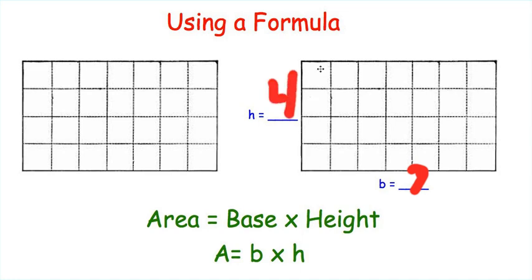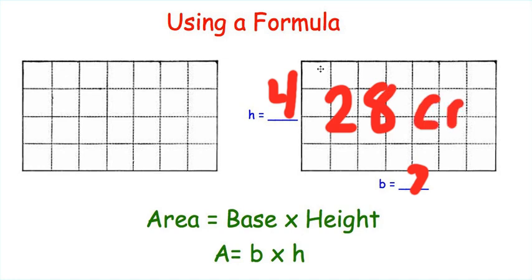So base times height, 7 times 4 — the area of this rectangle would be 28. We'll say this is centimeters squared. We put 'squared' when finding area because this is a two-dimensional shape.